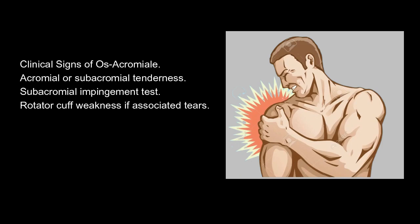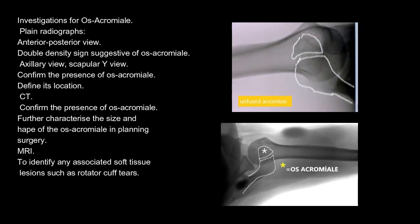Clinical signs of os acromiale include acromial or subacromial tenderness, a positive subacromial impingement test, and rotator cuff weakness if associated tears are present.